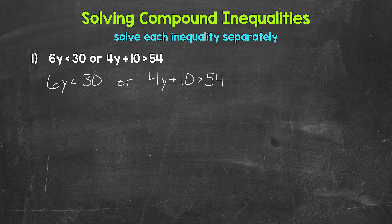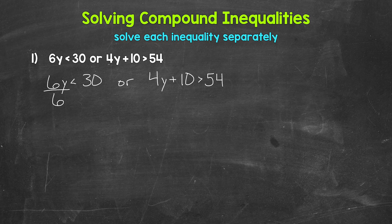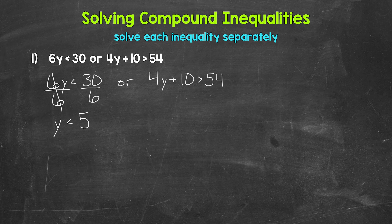Let's start with 6Y is less than 30. We need to isolate the variable Y. Y is being multiplied by 6, so we need the inverse operation of multiplication — that's division. Dividing both sides by 6, the 6s on the left cancel out, and 30 divided by 6 gives us 5. So we have Y is less than 5.